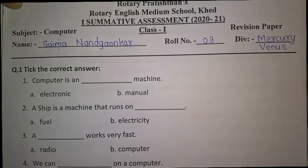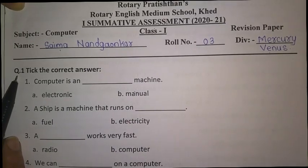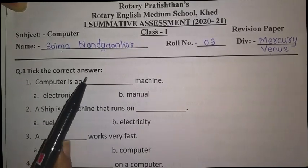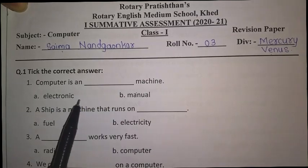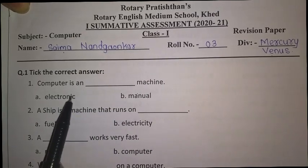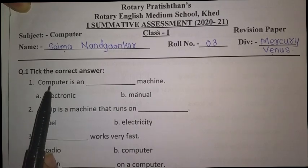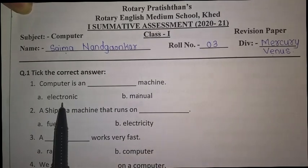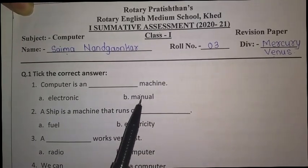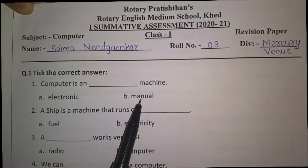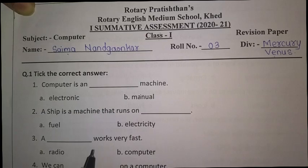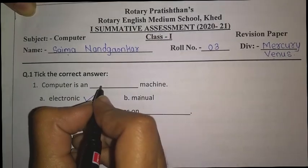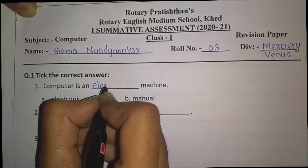Very good! Now let's start with question number 1. What is question number 1? Tick the correct answers. The answers will be there and you have to tick the correct answer. The first question is: Computer is a dash machine — is it an electronic machine or a manual machine? Very good! It is an electronic machine. So put a tick over here. You can also write here: electronic machine.